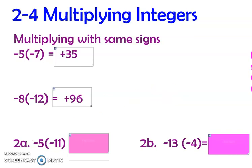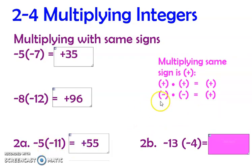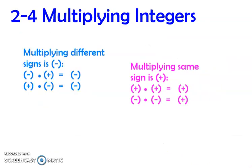Multiplying same signs gives a positive answer. Positive times positive is positive; negative times negative is positive. So negative 11 times negative 5 is positive 55 — two negatives, so positive. And negative 4 times negative 13 gives positive 52. So to recap: multiplying different signs gives a negative; multiplying with the same signs gives a positive.